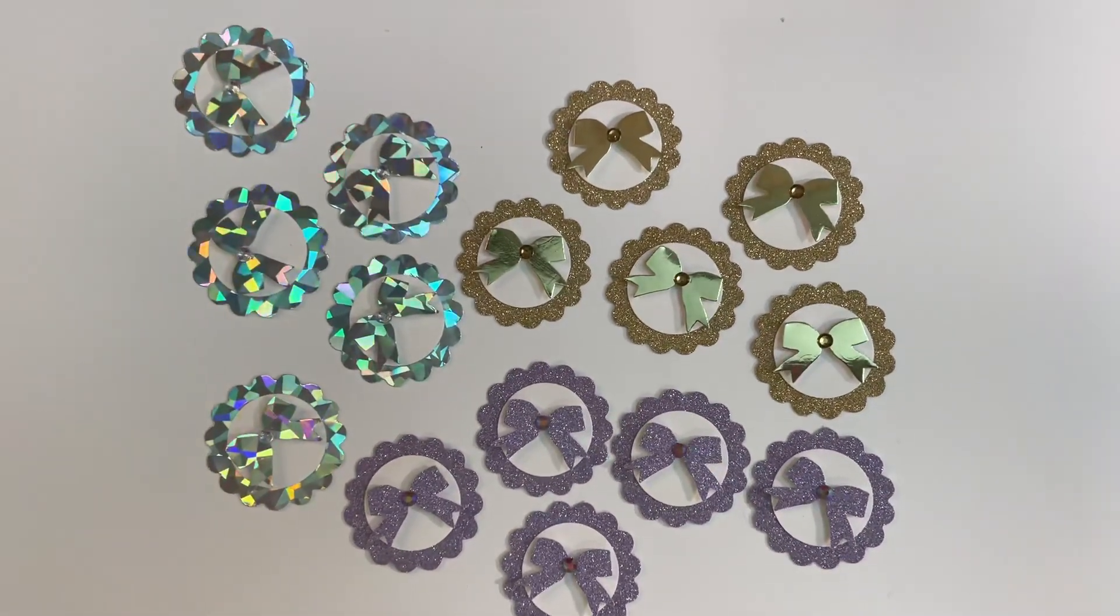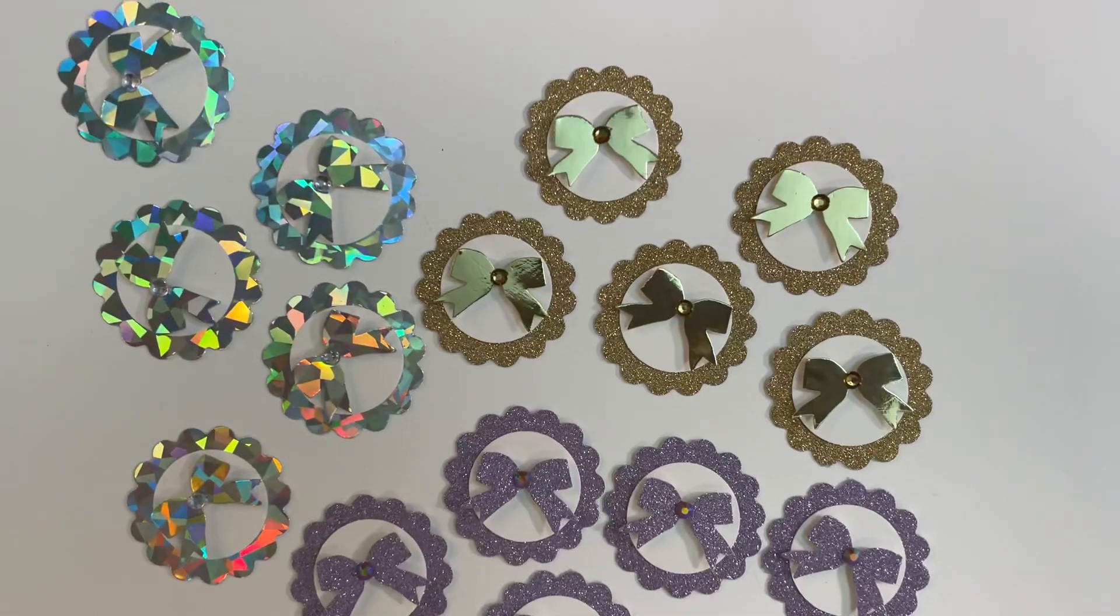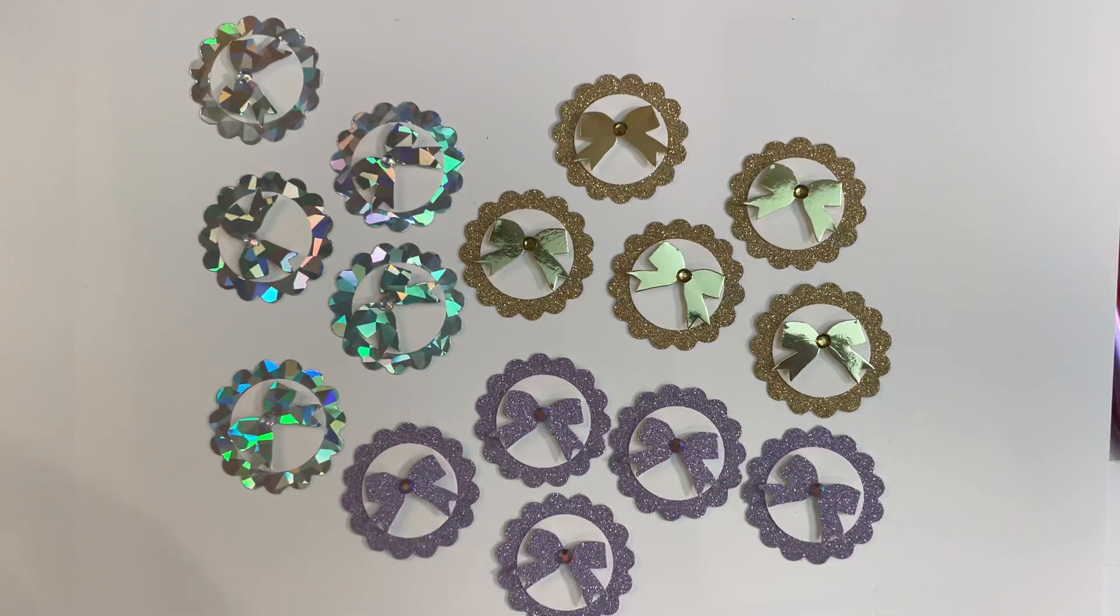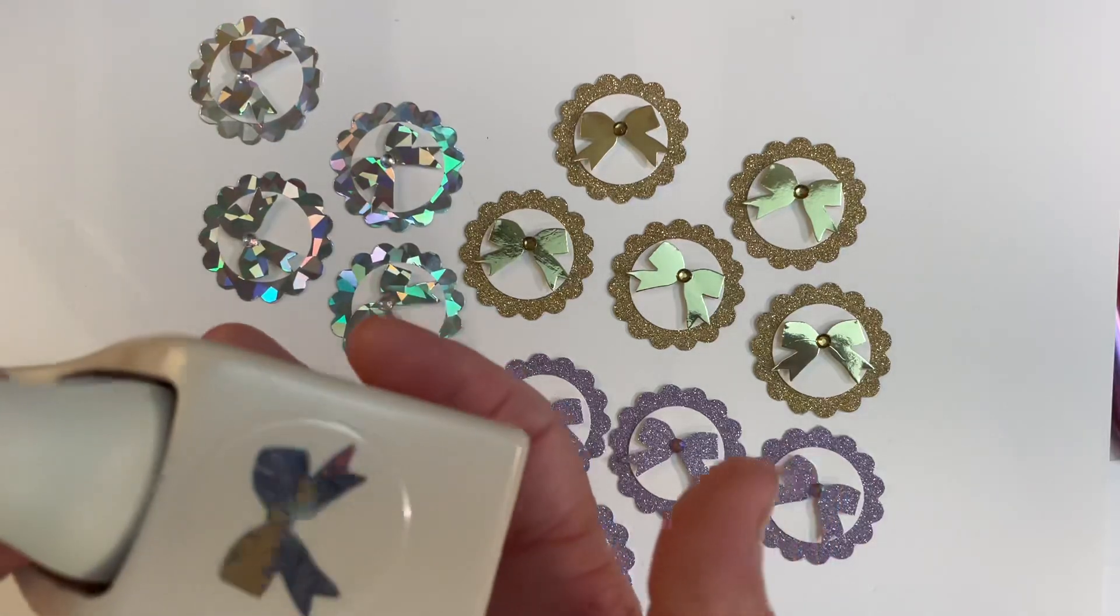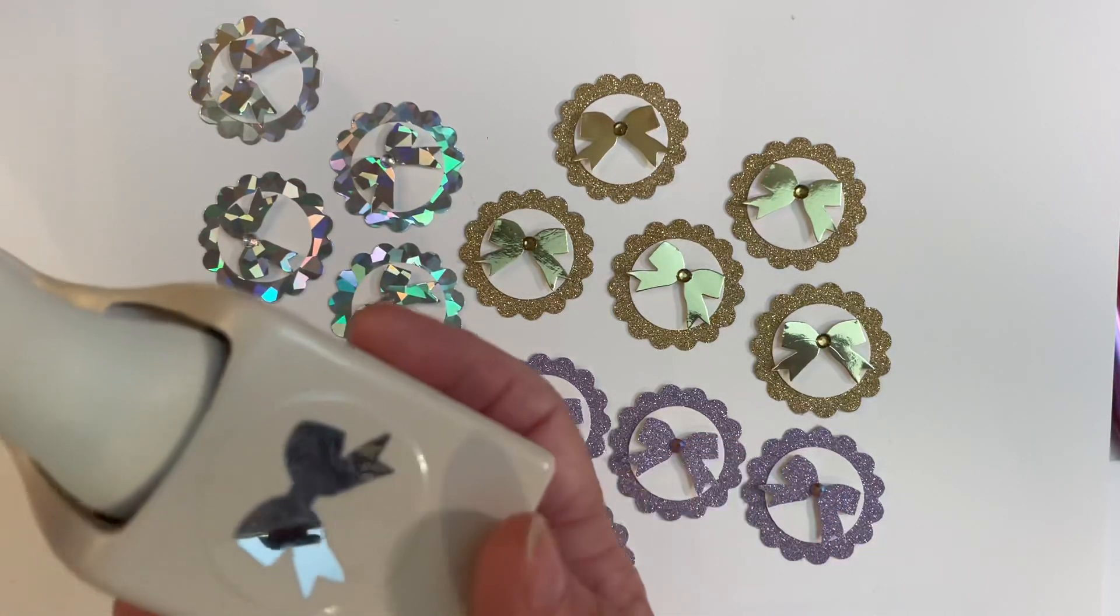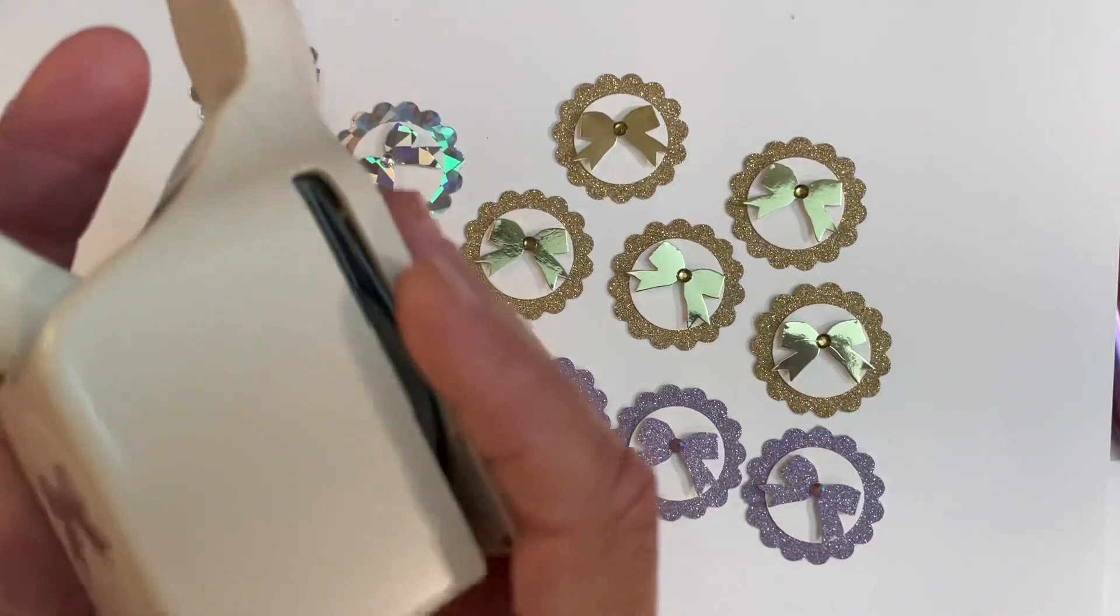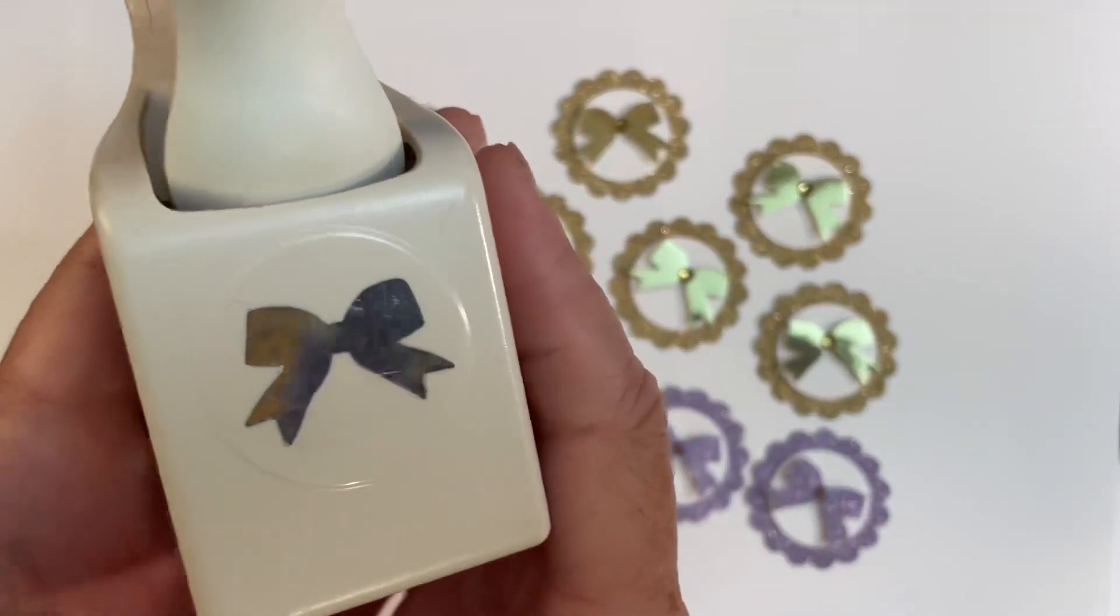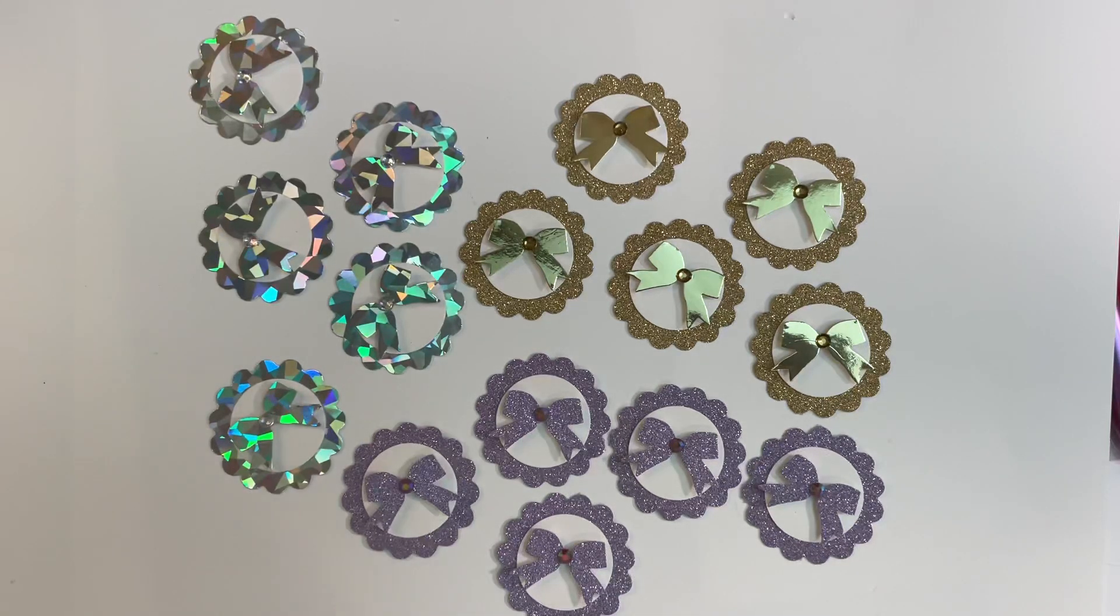I was sitting here at my craft table trying to decide what I wanted to do. I happened to look around behind me and saw one of my favorite punches—this little tiny bow punch. I'm not sure what brand it is; it might be Martha Stewart, but I love using this punch for so many things. I think it's the perfect size.